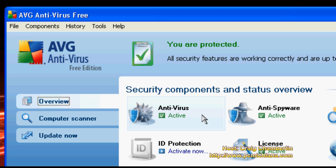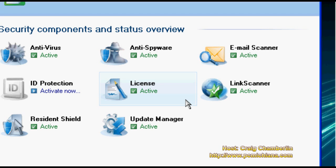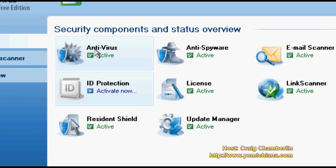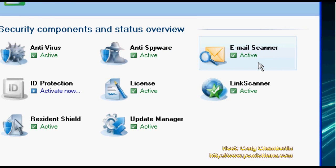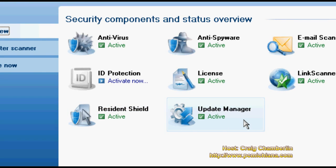After installing AVG Free, open it by double-clicking the icon on your desktop and that brings up your AVG overview. This tells you every service currently active in your AVG antivirus. You have your antivirus, which scans for viruses; your antispyware, which scans for spyware; your email scanner, which is only for email applications on your computer — not your webmail — like Outlook Express, Outlook, Thunderbird, those types of things. Your link scanner scans for malicious links. Your license is your free license. Your residential shield is your active real-time scanner, and your update manager is your automatic updater. The free version does not include ID protection.